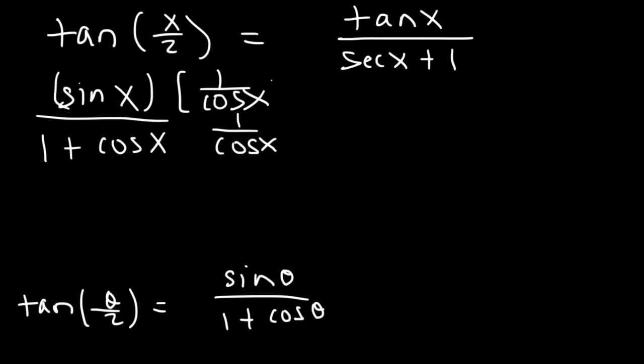So sine times 1 over cosine is sine divided by cosine. Now on the bottom, we need to distribute 1 over cosine to 1 plus cosine.